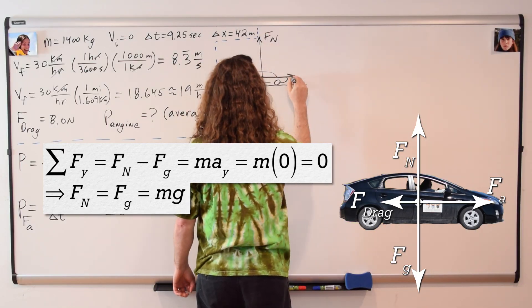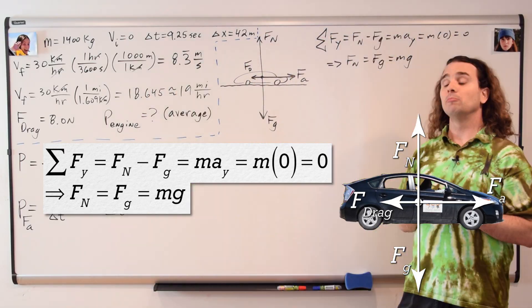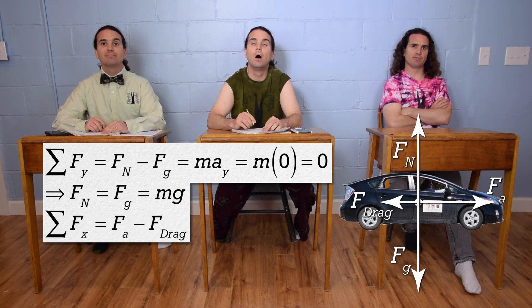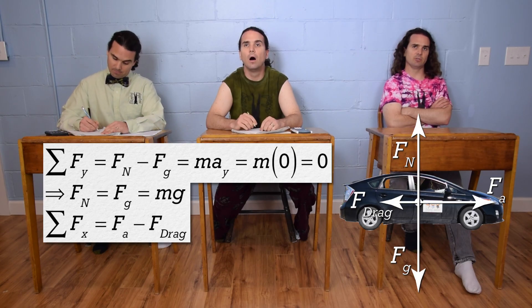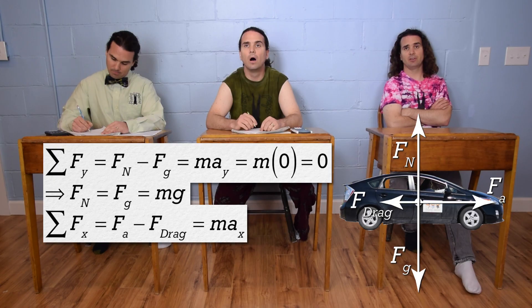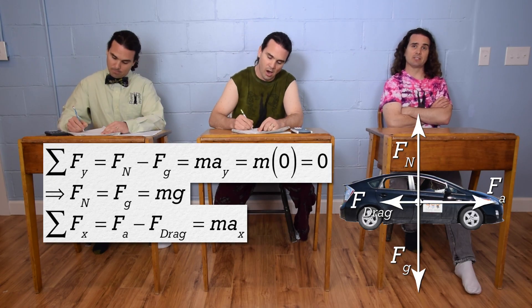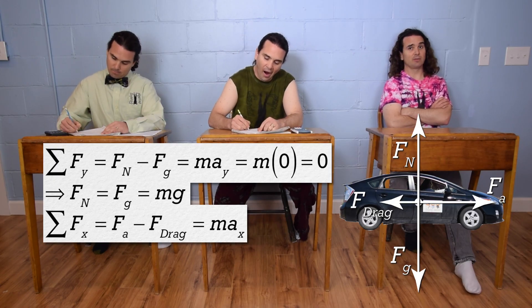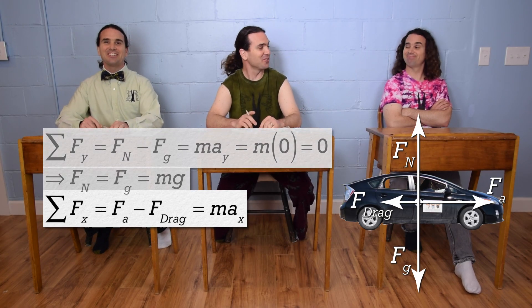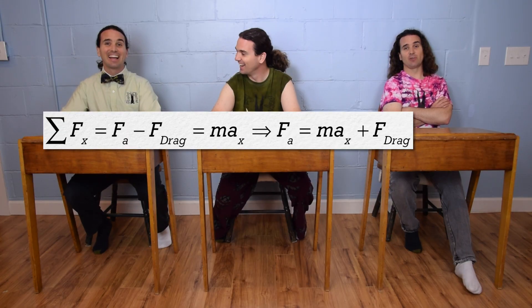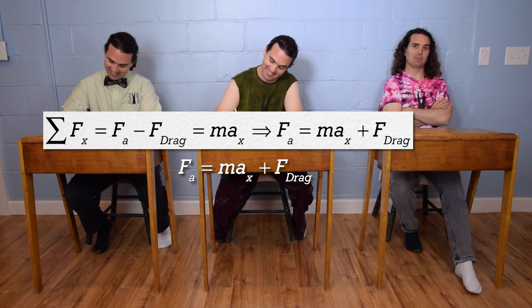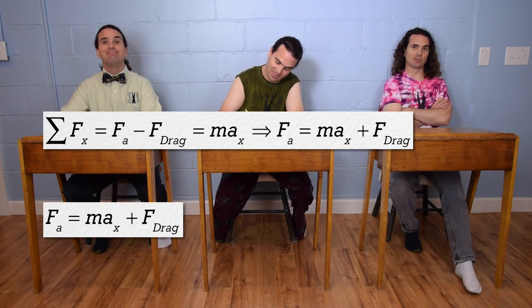Bo, please keep going. The net force in the x direction equals force applied minus the drag force, which again equals mass times acceleration, only this time in the x direction. We don't know the acceleration in the x direction, however, we can still solve for the force applied and put the equation in our equation holster. Add drag force to both sides and the force applied equals mass times acceleration in the x direction, plus the drag force.